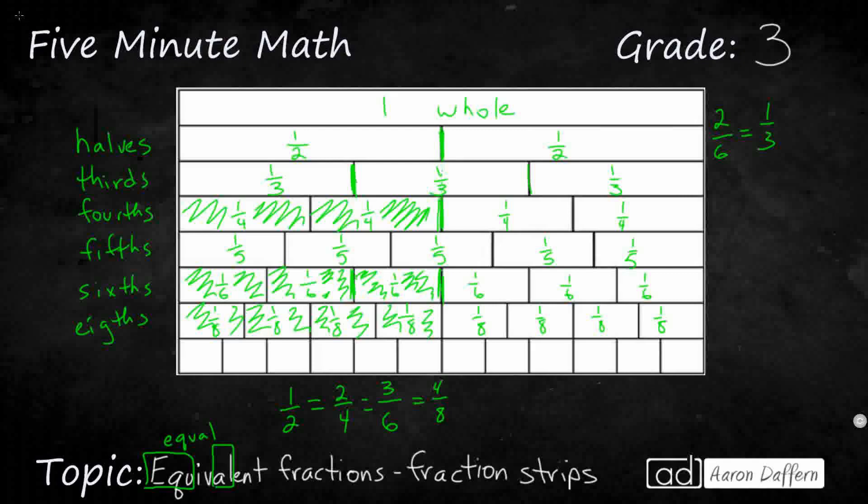Now, we'll also see that I could do this one fourth right here, and that goes to two eighths. So I can also bring in a few other ones. One fourth is equal to two eighths. I can also say that this three fourths is right there equal to that six eighths.